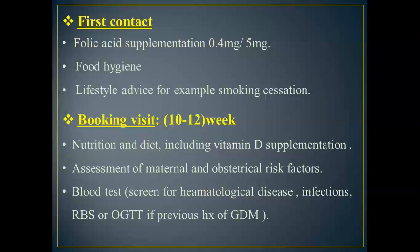If the pregnant woman has a high risk of having a child with a neural tube defect — such as history of siblings with neural tube defect, if she herself or her husband was born with a neural tube defect, if she is on anti-epileptic drugs, or if she is obese — she should take five milligrams of folic acid.